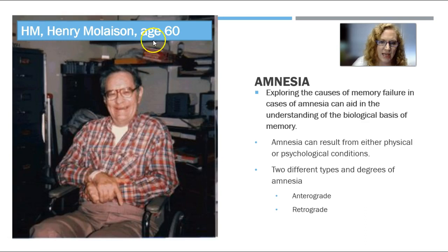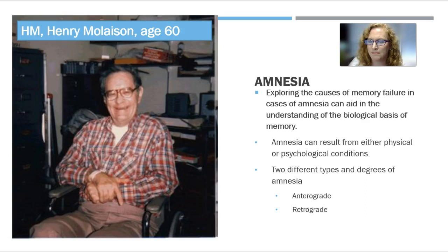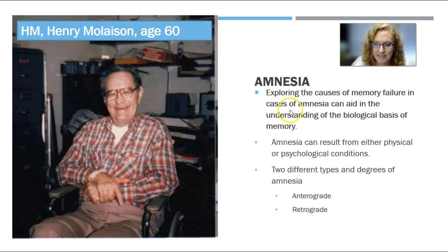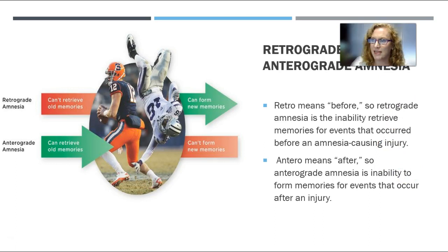This is Henry Molaison — in the literature he's called H.M. He was 60 years old here. Henry had the unfortunate experience of having part of his hippocampus removed. This was done in order to try to help him, and they didn't really know what was going to happen. What happened was he had massive memory failure — some pretty significant amnesia. Exploring the causes of memory failure in cases of amnesia can aid in understanding the biological basis of memory. Amnesia can result from either physical or psychological conditions. There are two different types and degrees of amnesia — anterograde and retrograde — and I will want you to know those two for the test.